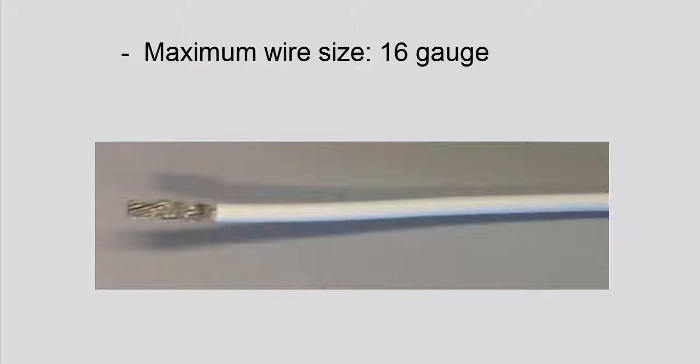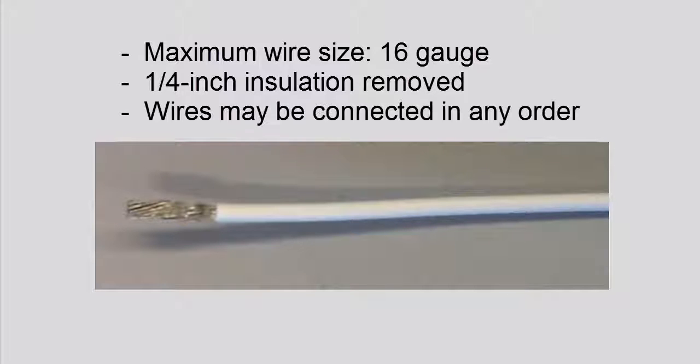The terminal blocks will accept a maximum wire size of 16 gauge. Each wire should have a quarter inch of insulation removed to create a connection without exposing too much wire. Please note that the order in which you connect the wires does not matter.